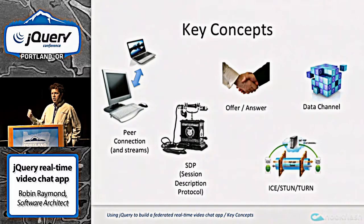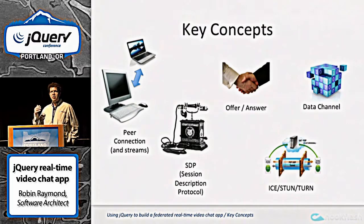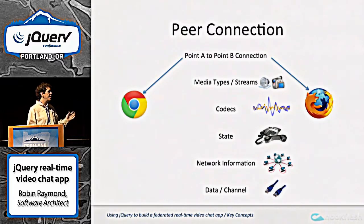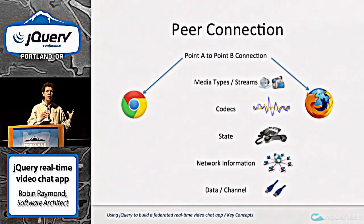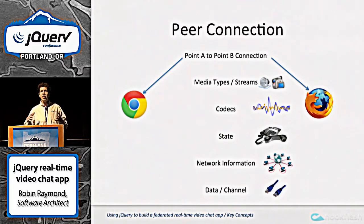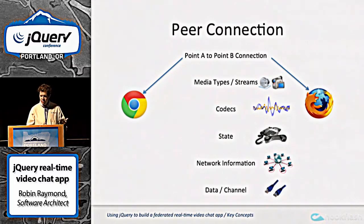I'm going to go over some of the concepts involved in building a video chat application on the web — you need to understand these, otherwise APIs won't make sense. The principle starts with a peer connection, which is literally a connection between one browser to the other. It describes all your media types — audio, video, codecs to compress the data into a reasonable size — because you wouldn't want to send raw binary video and audio streams over the wire. You've also got the state of your media, all your networking information, and optionally a data channel to send arbitrary data.